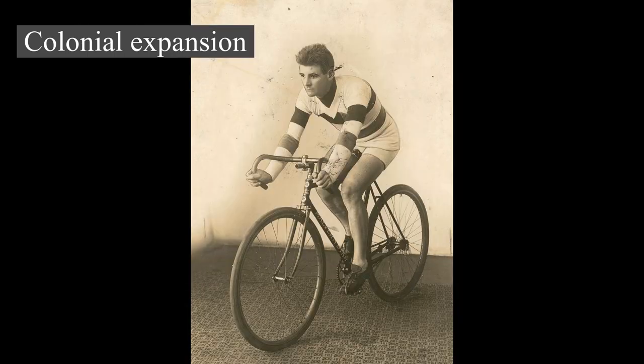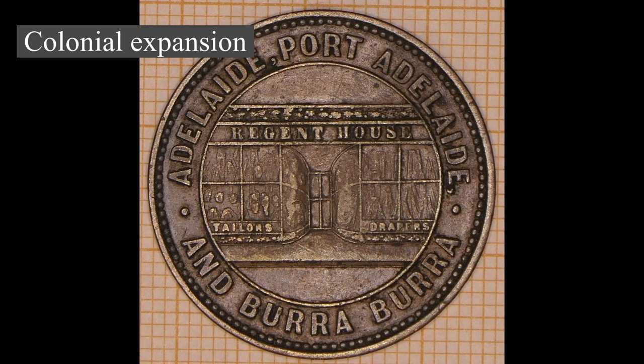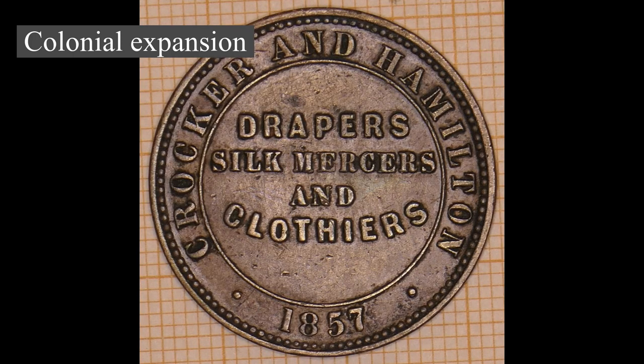In accordance with population growth, separate colonies were carved from New South Wales: Tasmania in 1825, South Australia in 1836, New Zealand in 1841, Victoria in 1851, and Queensland in 1859. South Australia was founded as a free province and was never a penal colony. Western Australia was also founded free, but later accepted transported convicts, the last of which arrived in 1868, decades after transportation had ceased to the other colonies.